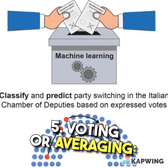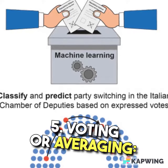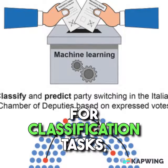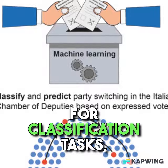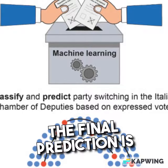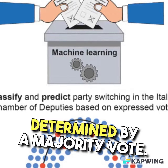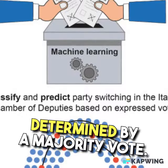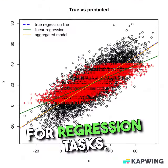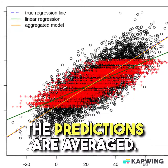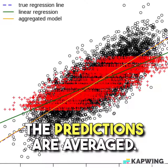5. Voting or Averaging: For classification tasks, the final prediction is determined by a majority vote. For regression tasks, the predictions are averaged.